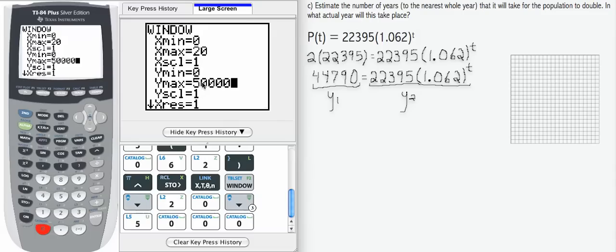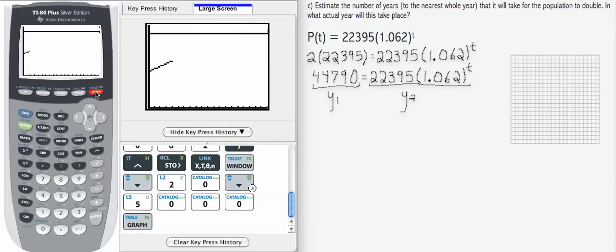So just to be sure that I can see all the parts of the graph, I'm going to hit graph and I can see the y1 part, which is the horizontal. There's my exponential part and I can see the intersection.